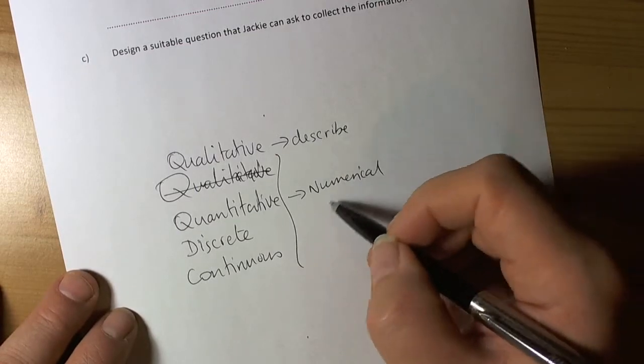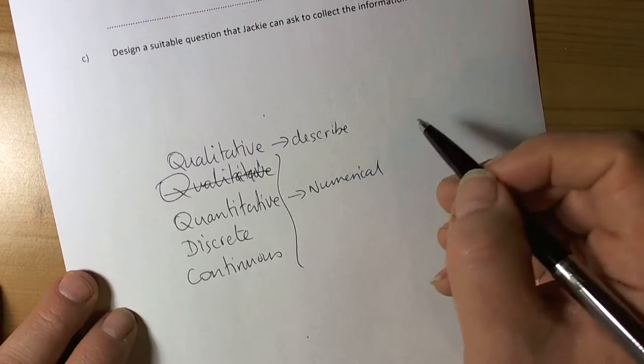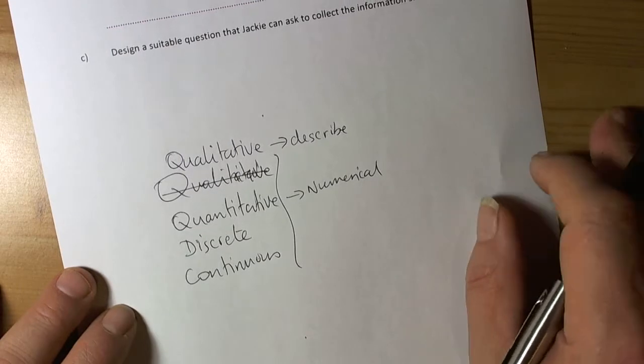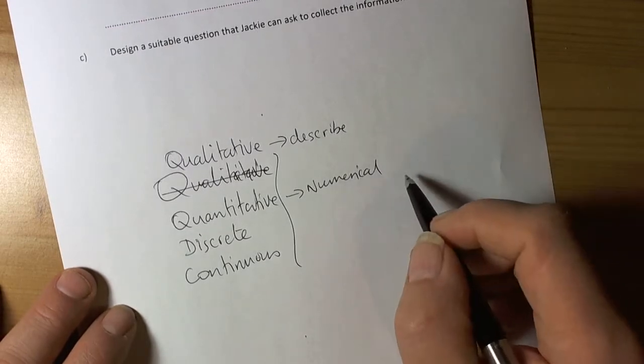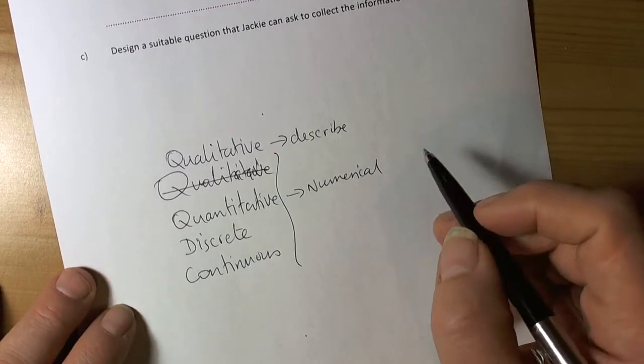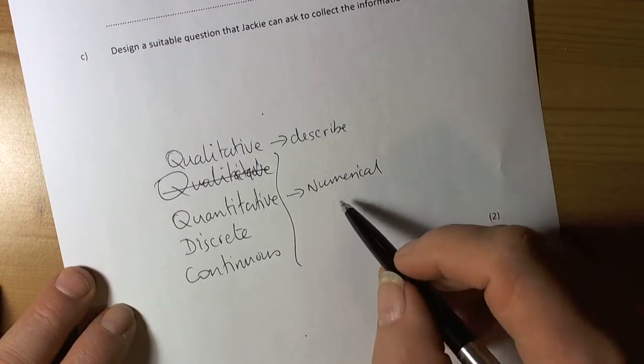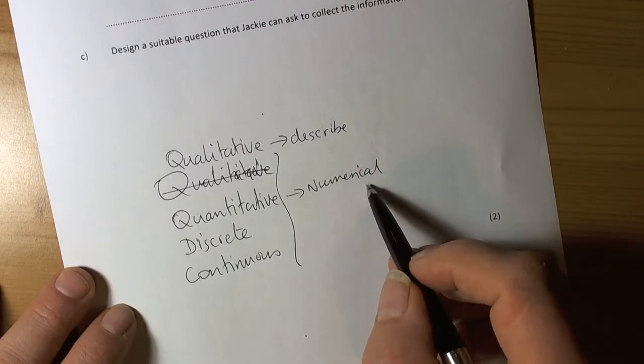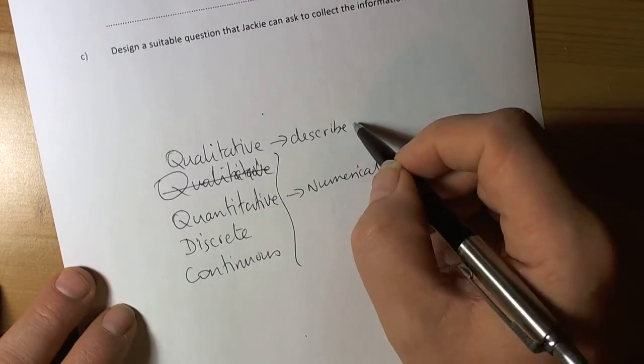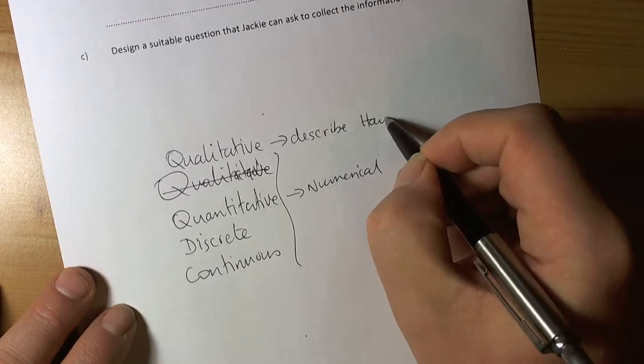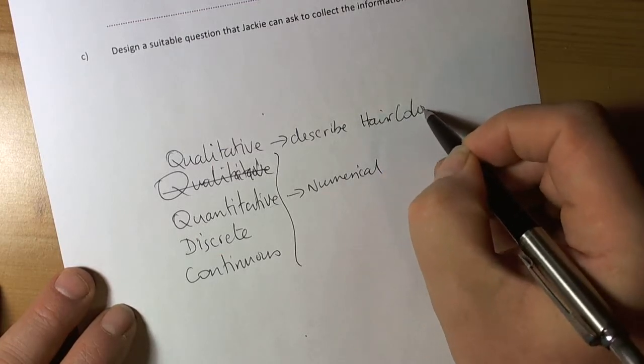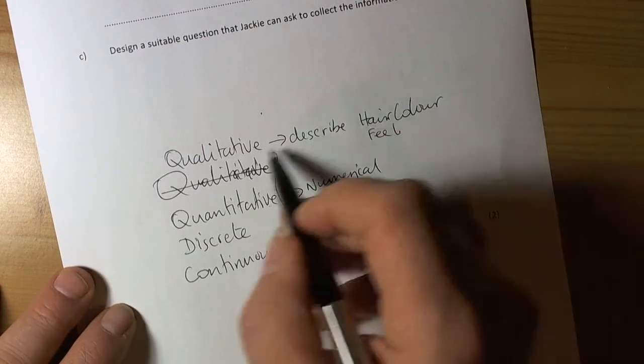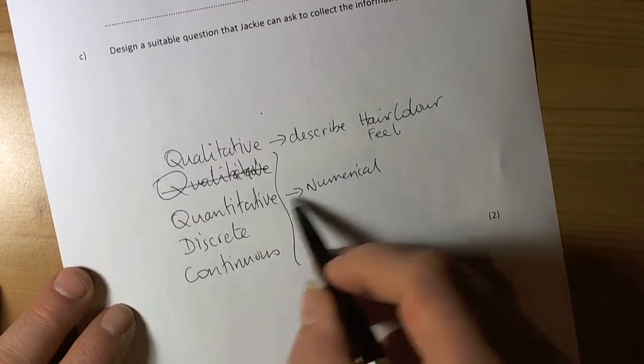For example, hair colour is descriptive - yellow, red, blue. The feel of a desk, whether it's rough or smooth, is qualitative. But if I give numbers to things, like counting the number of people in a room or the amount of money, then it's quantitative, it's got a numerical value. Descriptive, quality type things like hair colour or the feel of something have qualities. Quantitative is numerical.